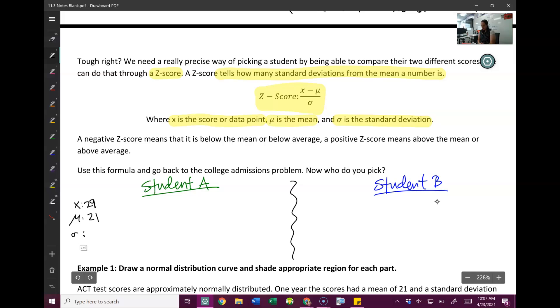And then sigma is the standard deviation, which we look back and it was 5. So let's plug it all in. We get 29 minus 21 all over 5. And we just plug that into our calculator and see that it's 1.6. Okay, so student A scored exactly 1.6 standard deviations above the mean.